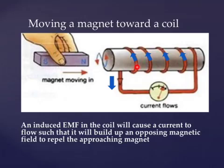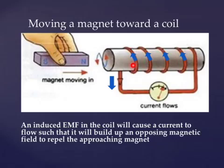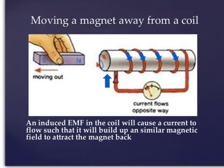We can also generate current in a coil by moving a magnet either towards it or away from it. An induced EMF in the coil will cause a current to flow in the coil such that it will build up an opposing magnetic field to repel the approaching magnet. So the current in the coil will flow in such a way that a north pole will be produced here — north will repel this north. Now when this magnet is being pulled away from the coil, the coil reacts in the opposite way: the current flows such that the magnetic field builds up a south pole here to attract this north back.